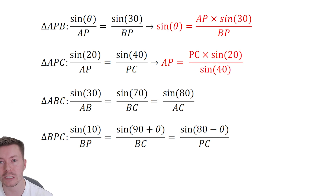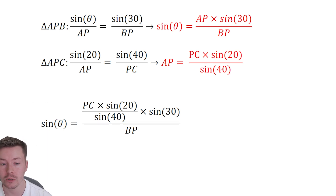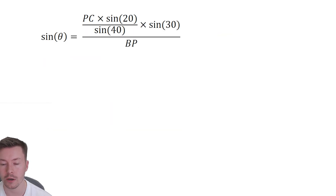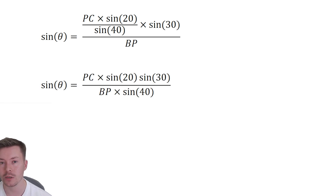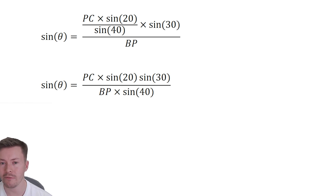I'm going to substitute AP into the equation above and we get this, which looks a little messy. To deal with the fraction within a fraction, I multiply top and bottom of the large fraction by sine 40 to cancel it out. That cancels the sine 40 in the numerator and multiplies BP by sine 40 on the bottom. Now we have PC on top and BP on the bottom.